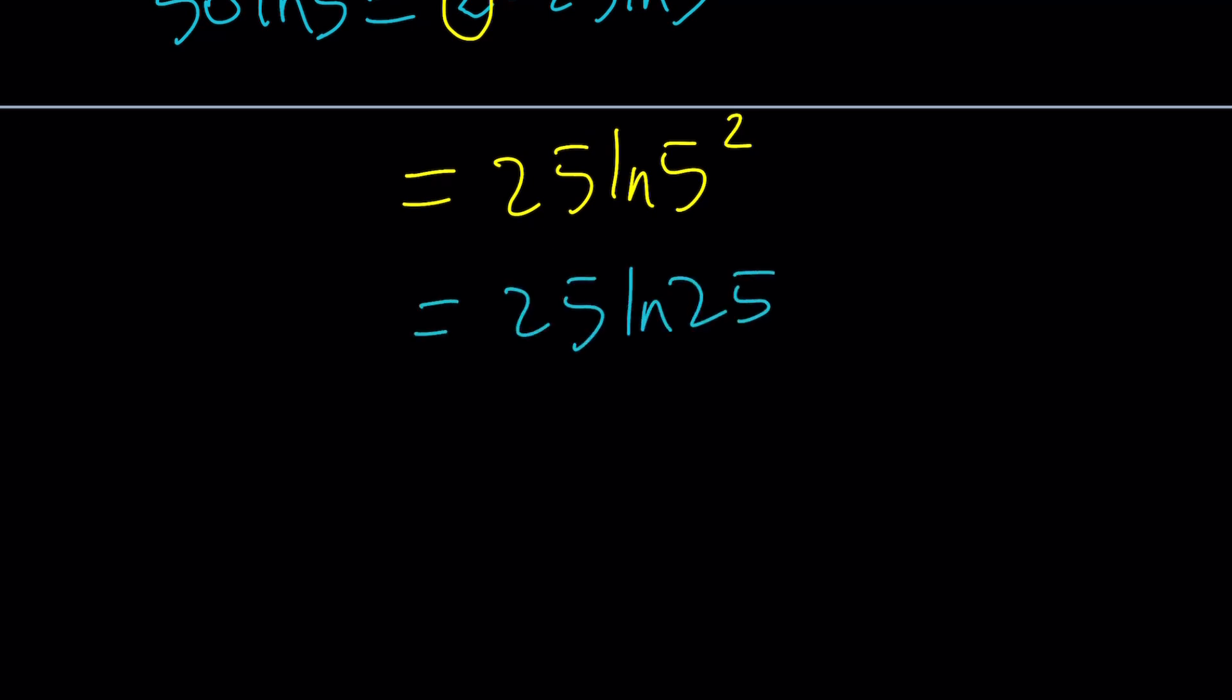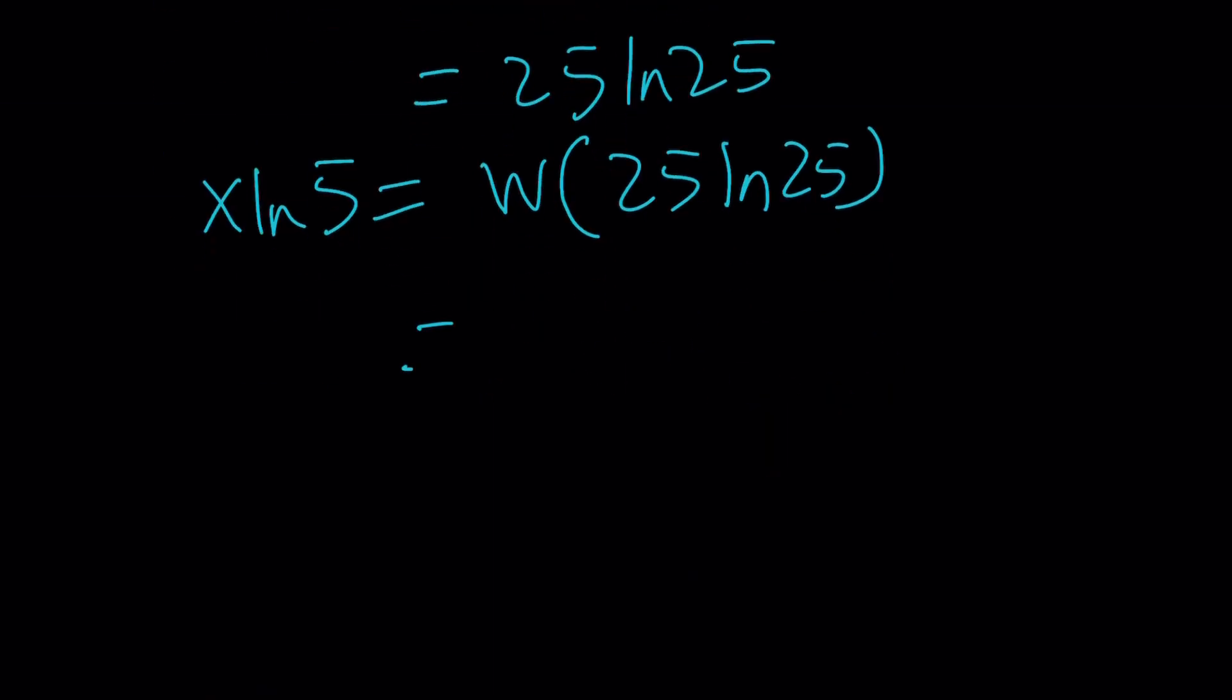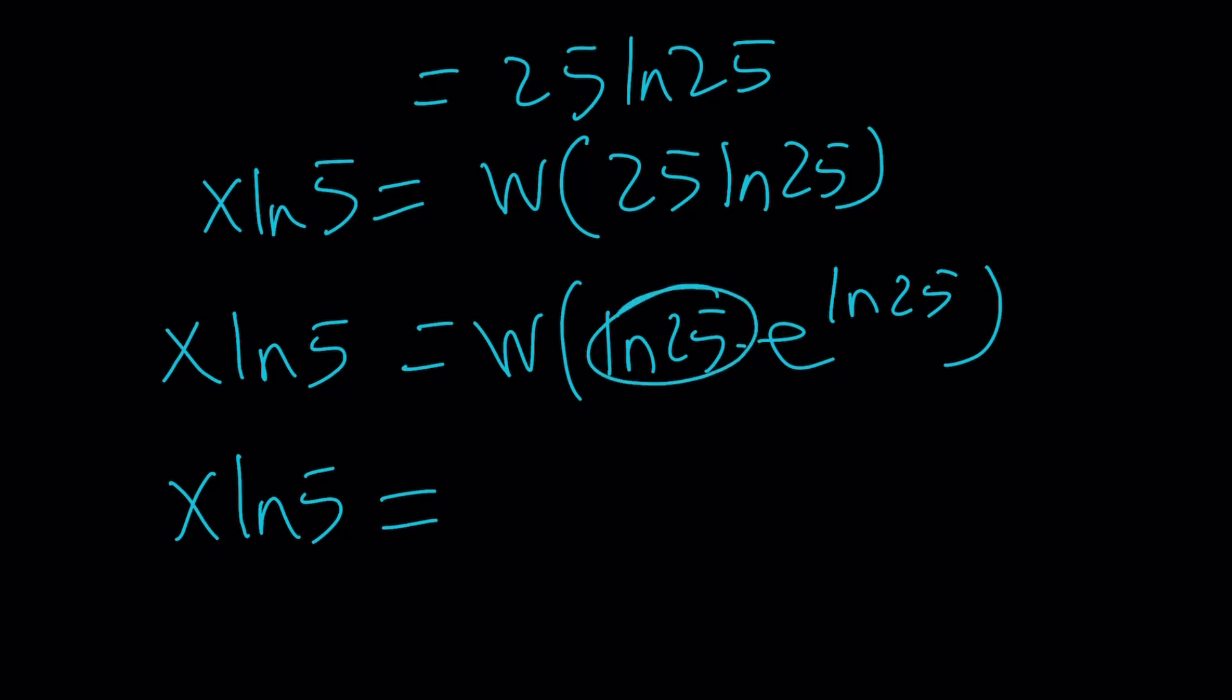So now we got this, and this gave us 25 ln 25. Now we have the following. We have x ln 5 on the left-hand side, and on the right-hand side, we have W of 25 ln 25, which I'm going to write as W of ln 25 times e to the power ln 25, and then that's going to give us ln 25 because that's going to be our new T, and ln 25 can be written as ln 5 squared, which is 2 ln 5, and finally, from here, x is going to be 2.